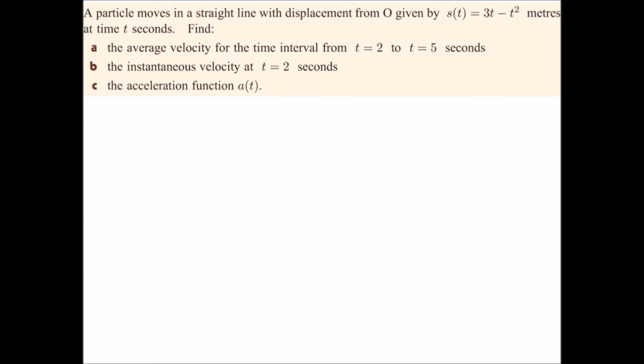So for part a we need to work out the values of s(2) and s(5). s(2), we replace 2 in our function here, we get 6 take away 4, which is 2. And s(5), we have 15 take away 25, which is negative 10 meters.